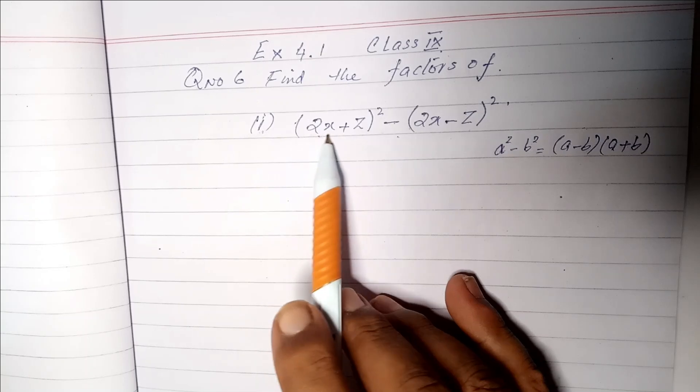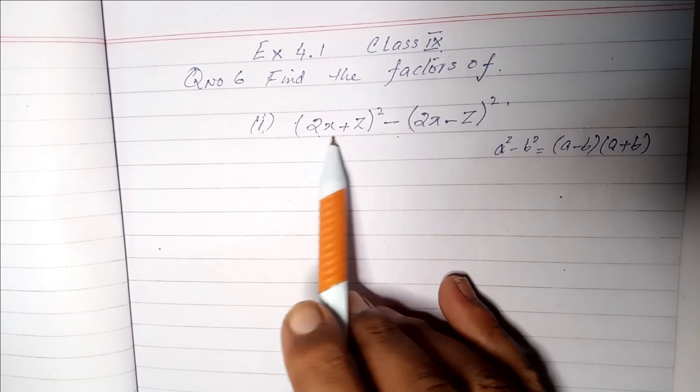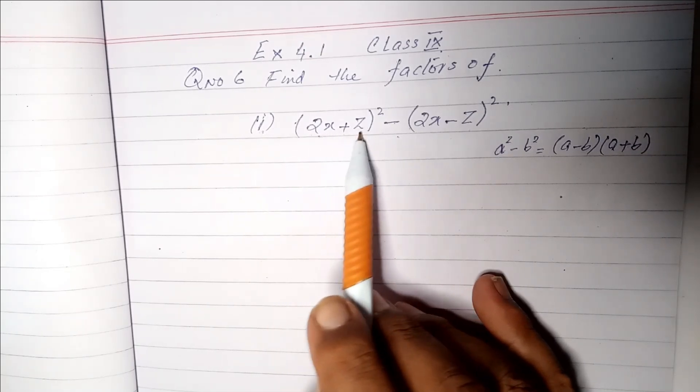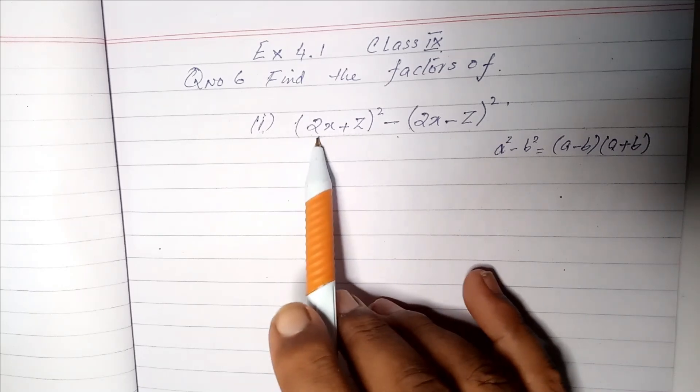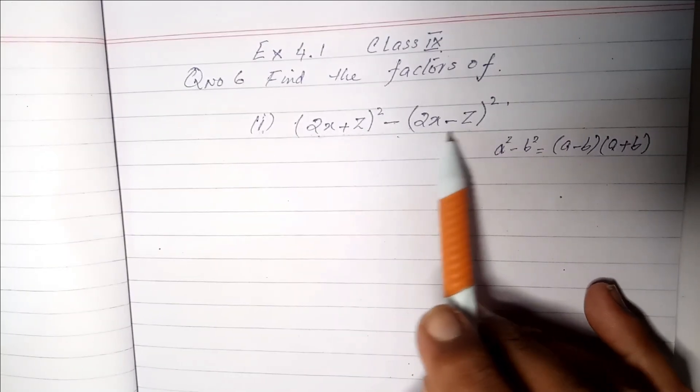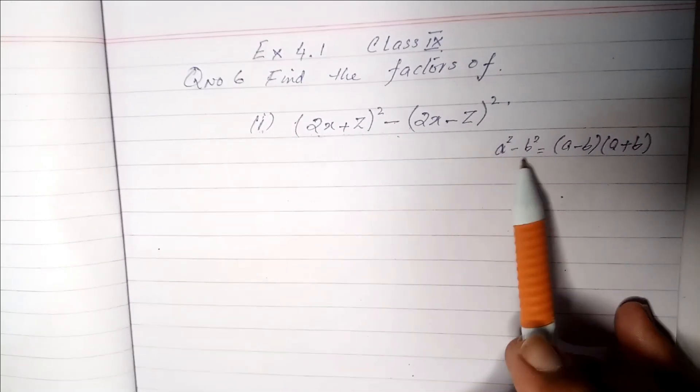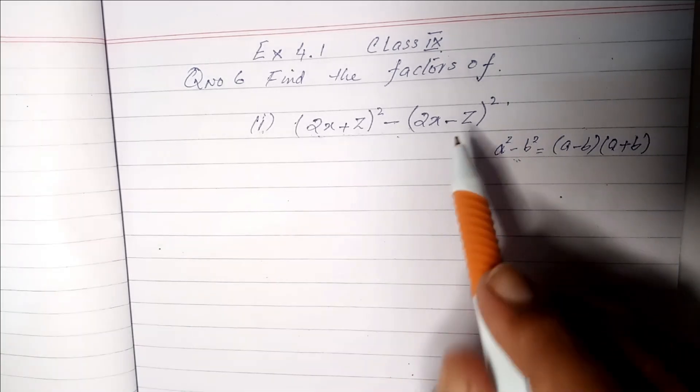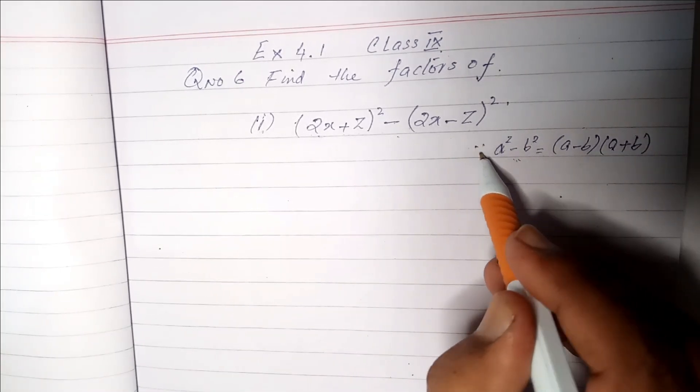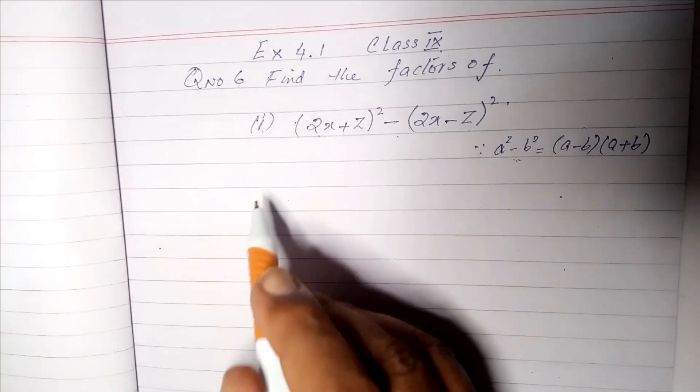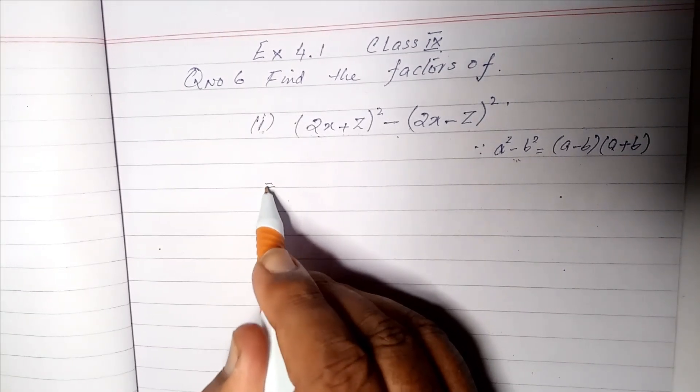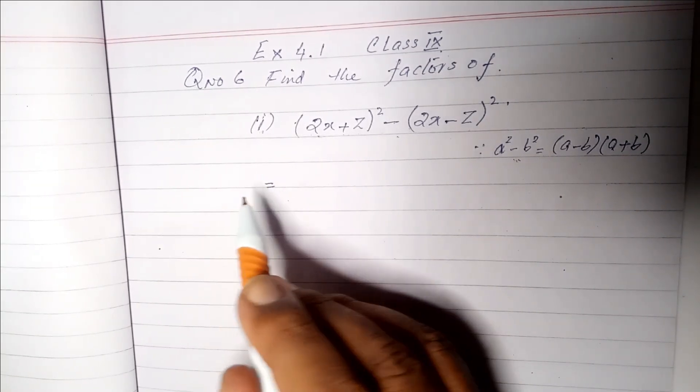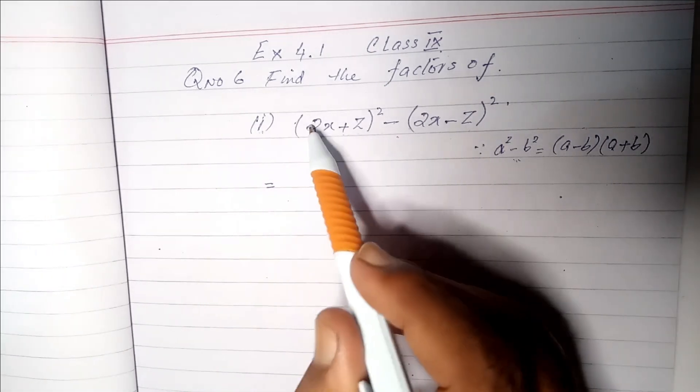First of all, you have to accept one value. Suppose that (2x+z)² is the whole value a, and (2x-z)² is value b. In the middle is minus, so this formula will be applied. Let's go, first we have written this formula. We have written it in reference. We will make this equal to the sign because this is equal to this step.